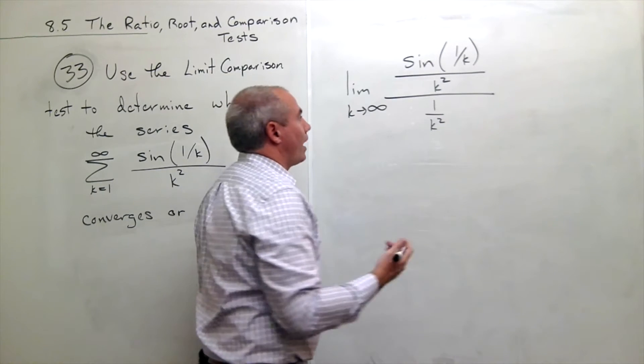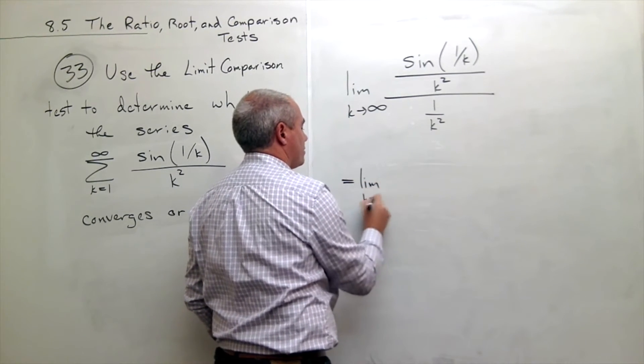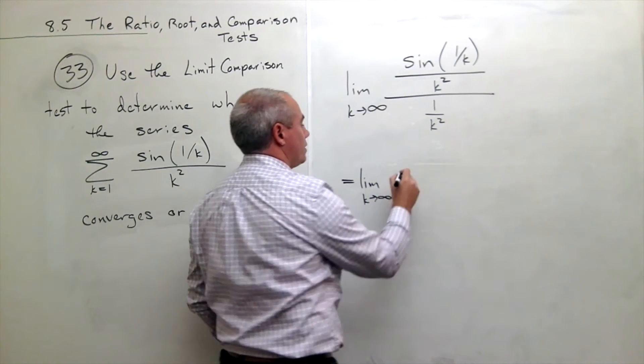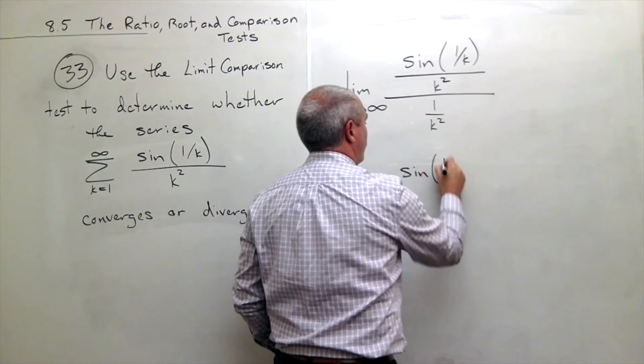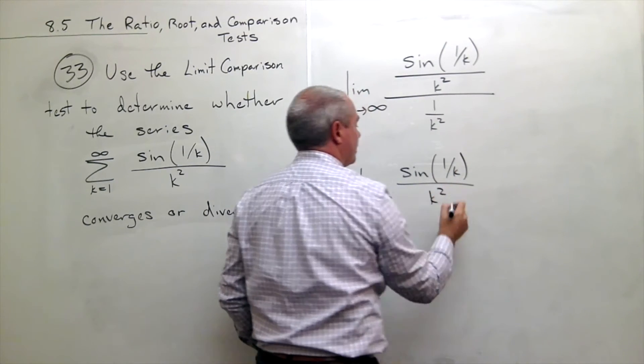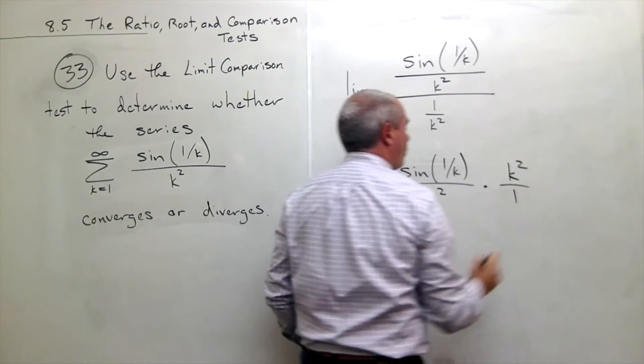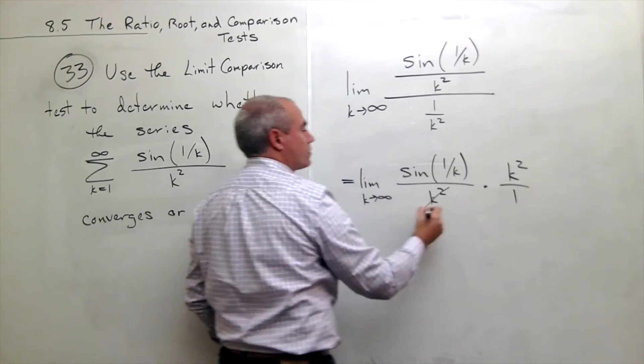So I can flip and multiply here, and if I do I get the limit as k goes to infinity of sine of 1 over k divided by k squared, and then when I flip and multiply I get times k squared over 1. Obviously the k squareds cancel.